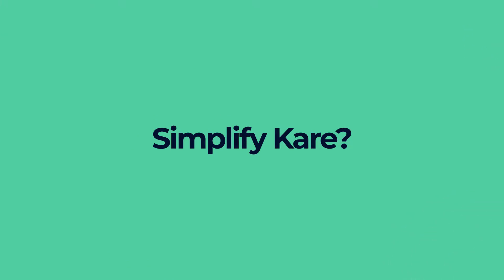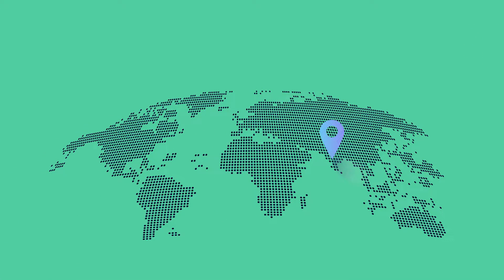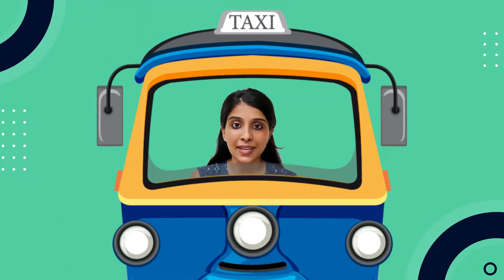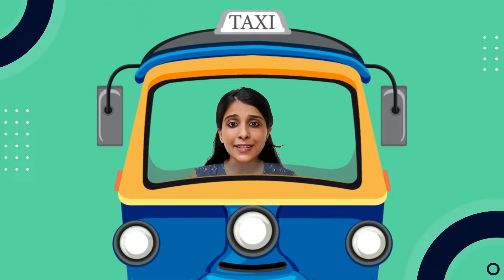To simplify — for example, you want to travel somewhere. So aap ek destination finalize kareenge, phir us destination ke hisaab se you will choose a mode of transportation. Matlab, ghar se market jaane ke liye auto-rickshaw le sakte hain, lekin Delhi se Mumbai jaane ke liye same cheez use nahi kar sakte. Toh aise hi, aapke bade aur chote dono goals ke liye ek jaise savings plan nahi ho sakti.